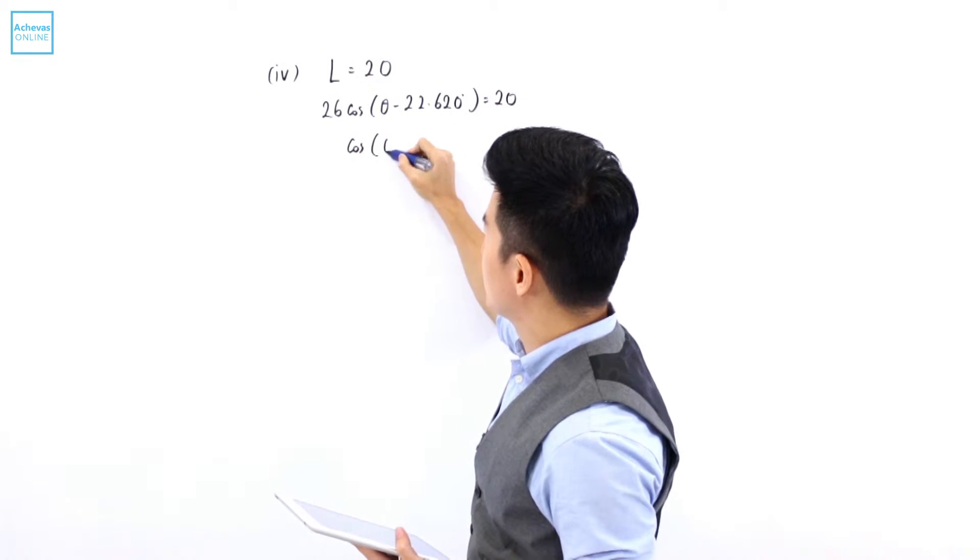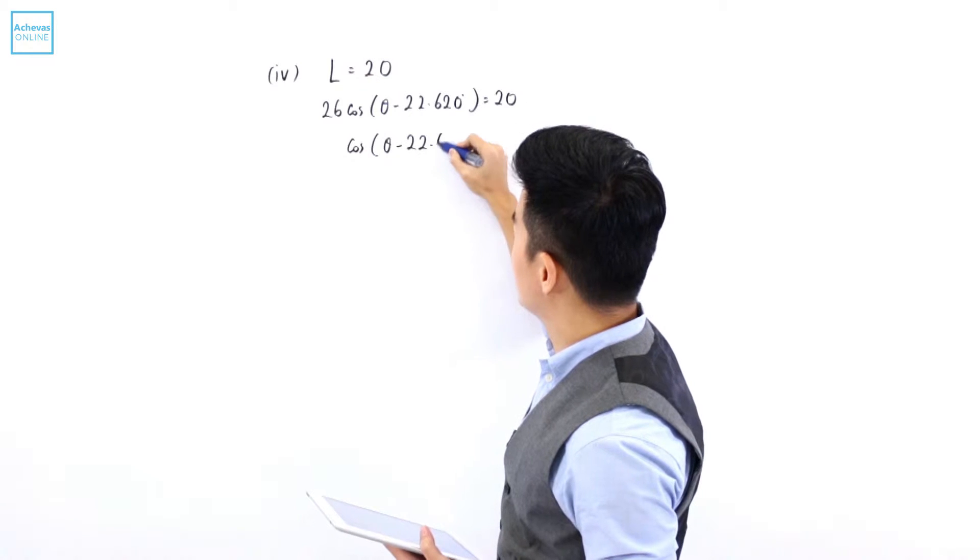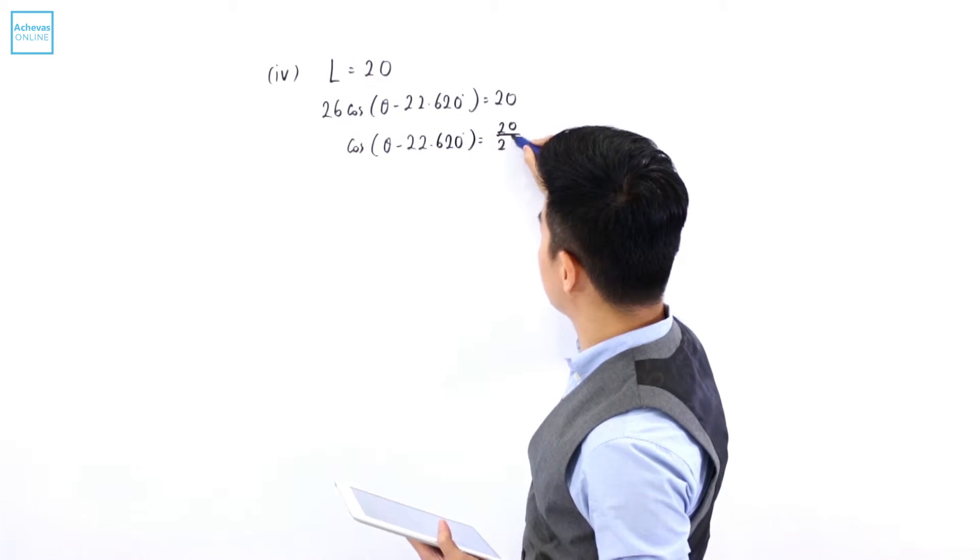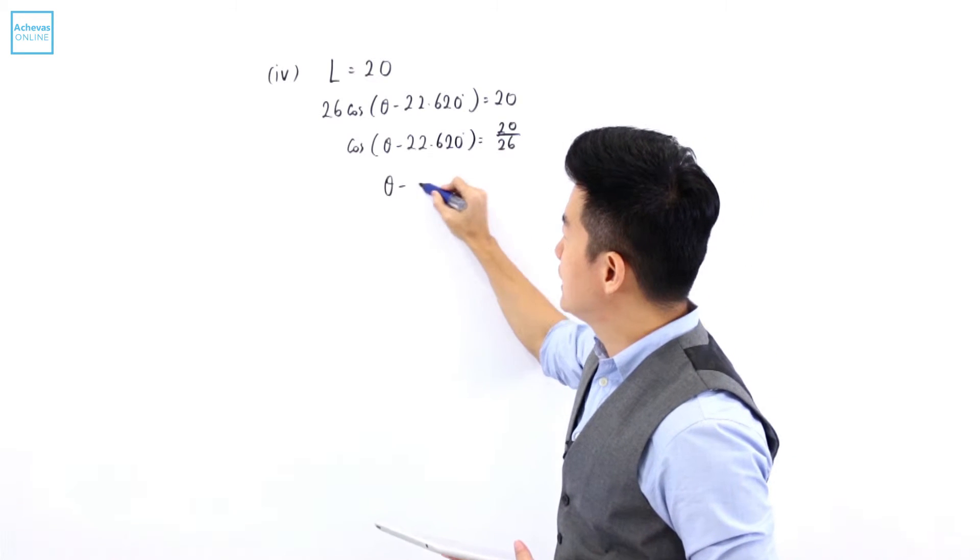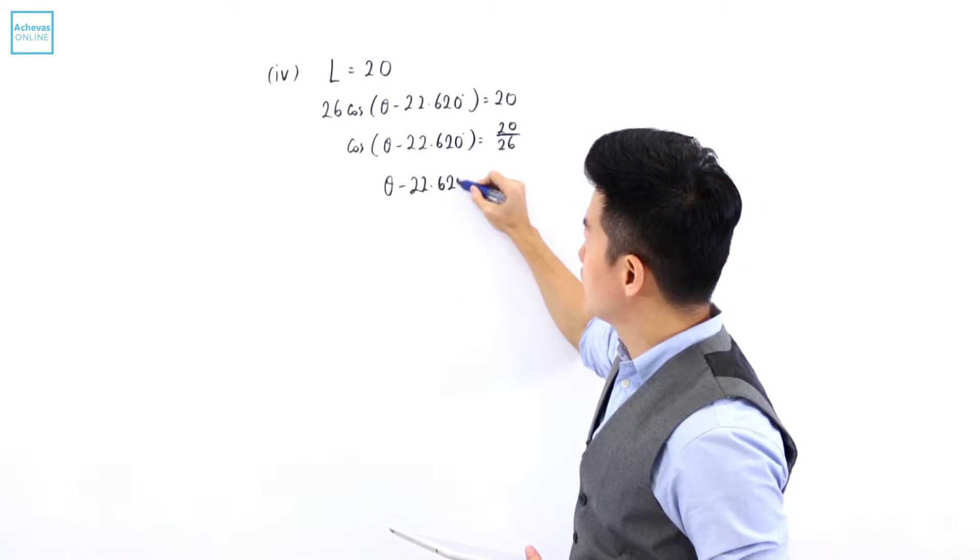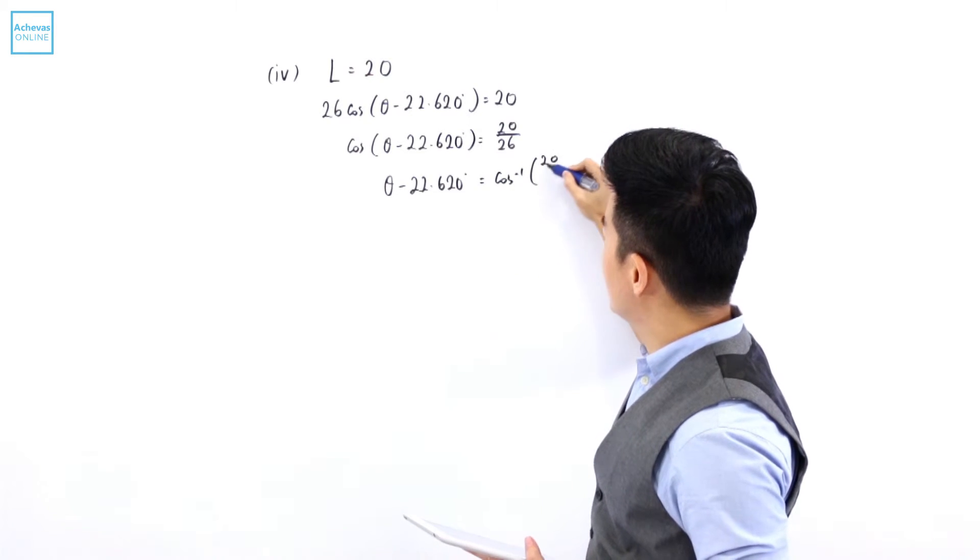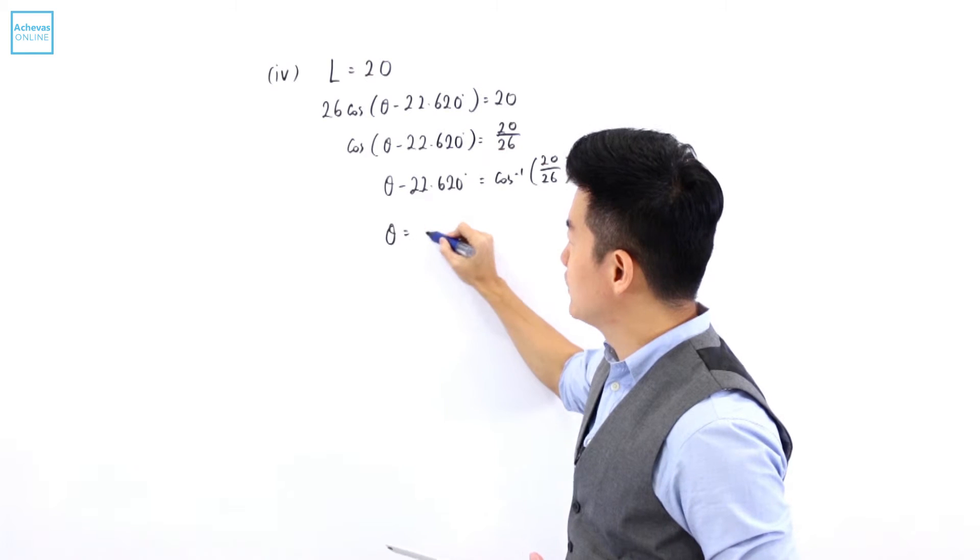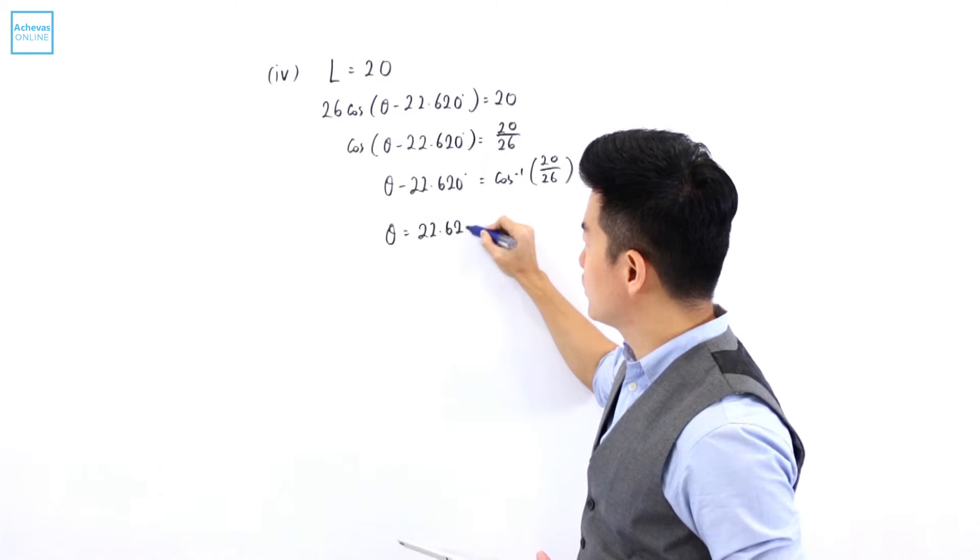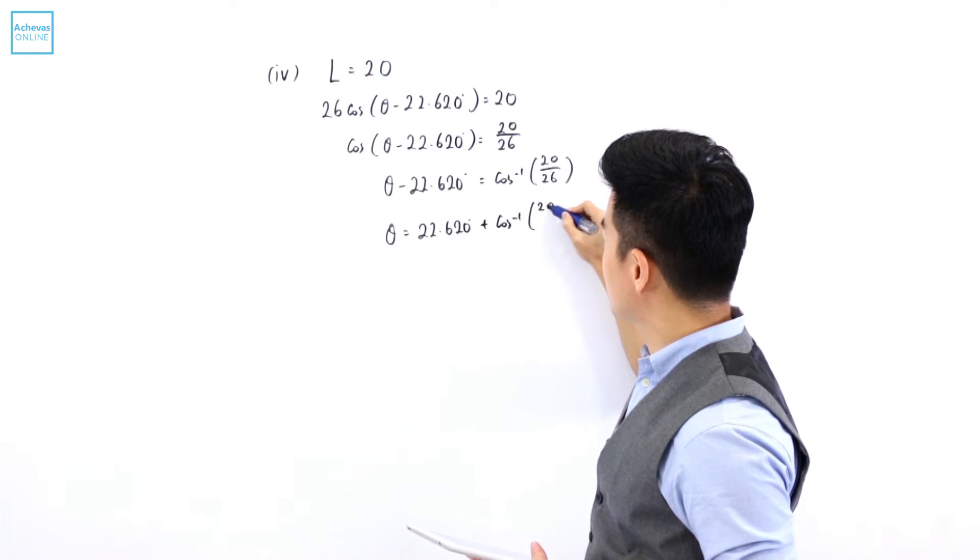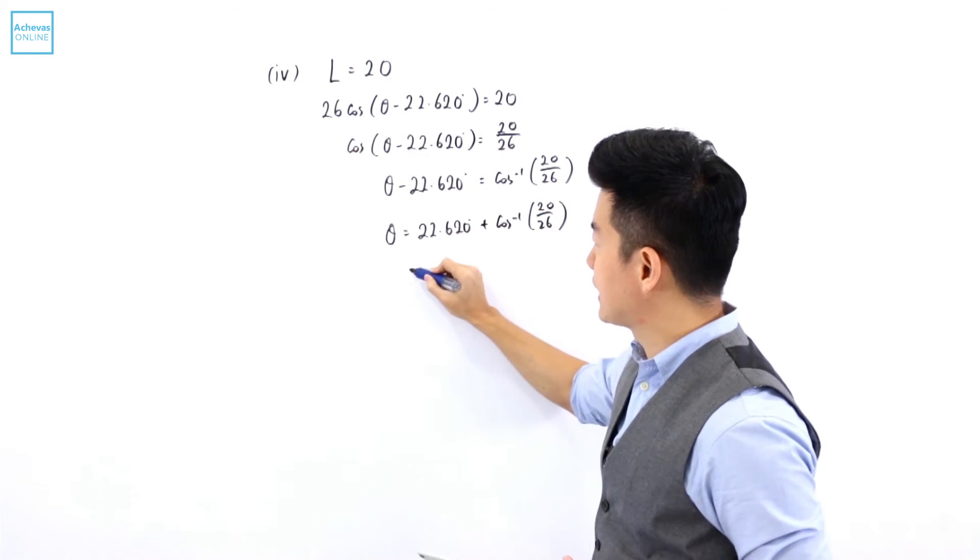This means that cosine of theta minus 22.620 degrees is 20 divided by 26. So theta minus 22.62 degrees is going to be cosine inverse of 20 divided by 26, and theta will just be 22.62 degrees plus cosine inverse of 20 over 26.